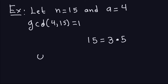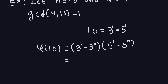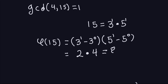So what is phi of 15? Remember, every factor in the prime decomposition produces a factor for phi of 15. We have 3 to the first power times 5 to the first power. It's going to be (3^1 − 3^0) times (5^1 − 5^0), which gives us (3−1) times (5−1) = 2 times 4 = 8. So phi of 15 is 8.